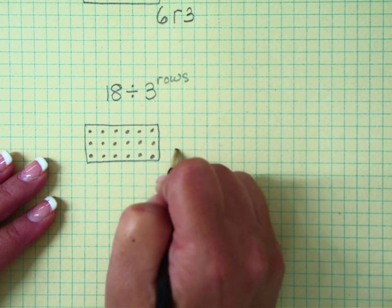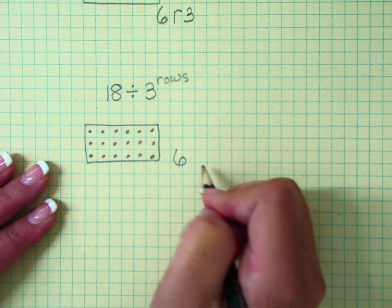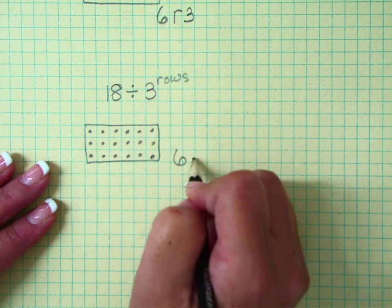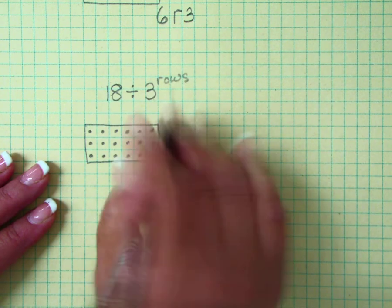In our three rows, how many dots did we make? We made one, two, three, four, five, six, so our quotient is six. And because there's no remainder, you don't have to put remainder zero; it's just the quotient by itself.